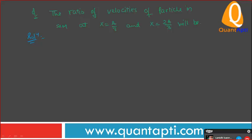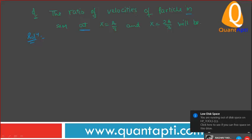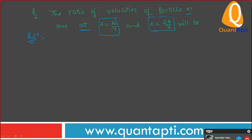Solve the question first. Write down the question. The ratio of... Raghav is your screen visible? No sir. Okay. The ratio of... Sir, I've updated it but still not working. No problem, I'll repeat the question. Listen to it. How will we do this? The ratio of velocities of particle in SHM at X equals A by 3 and X equals 2 A by 3 will be. Omega will be equal, right, for both?